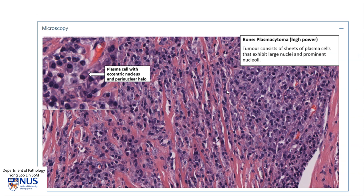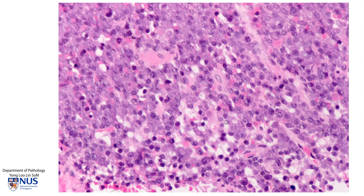Here is an example of the microscopic features, which show sheets of plasma cells. In this particular case, the plasma cells are quite mature, so they very closely resemble normal plasma cells. Here is another example of a different case where you can see a greater degree of cytologic atypia — in some areas, these plasma cells have relatively large nuclei and prominent nucleoli, as you can see here, as well as here.